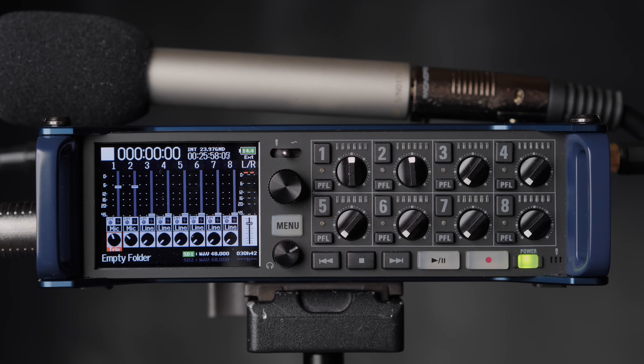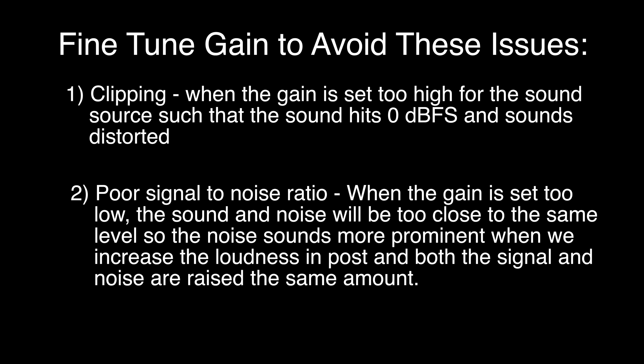Since we don't have an auto gain feature on the F8 or F8n, how do we set the gain level? There are two main things you're trying to manage. Number one: you want to avoid clipping. When the gain is set too high for the sound source, the audio will clip — it gets pushed up against 0 dBFS and it will distort. It sounds pretty awful, like this — this is an example of distortion and clipping.